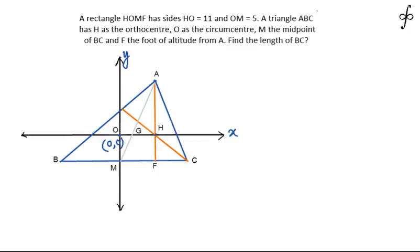So circumcenter O is at origin (0,0). Then the point H, the orthocenter, will be at (11,0) because OH equals 11. And since OM length is 5, the point M is going to be (0,-5) below the x-axis.